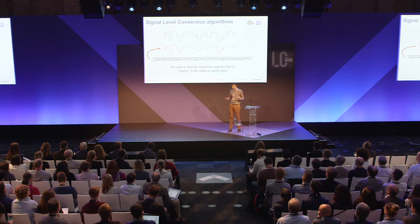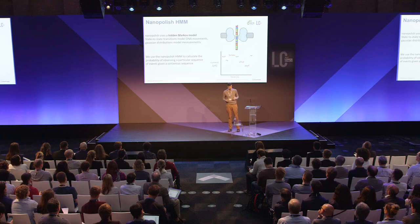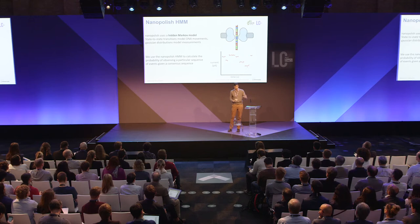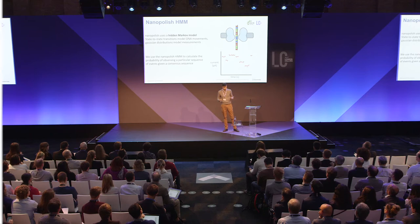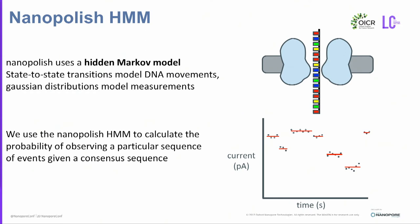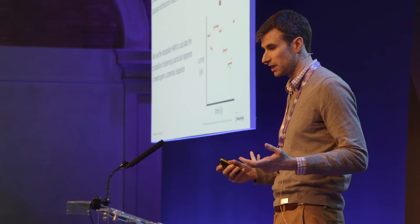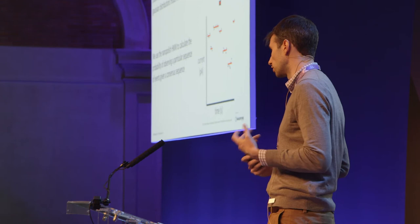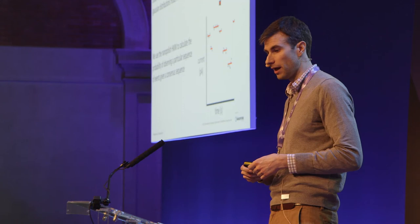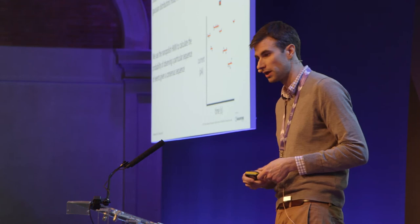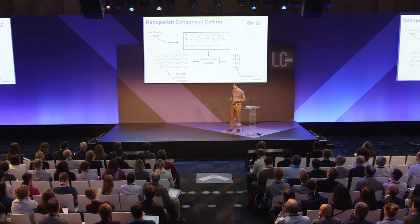The way we do it is we compute the consensus sequence that is closest, in a probabilistic sense, to all of our observed event data — the consensus that maximizes the probability of observing these events. Nanopolish uses a hidden Markov model to do this. It has a state for every K-mer of your candidate consensus sequence, and state-to-state transitions through the HMM model movements of DNA through the pore. The measurement process is modeled using Gaussian distributions where the parameters are determined by the actual K-mer sequence. Using standard HMM algorithms like the forward algorithm, we can calculate the probability of observing an arbitrary nanopore read from an arbitrary consensus sequence.